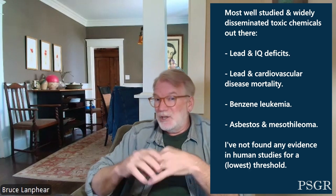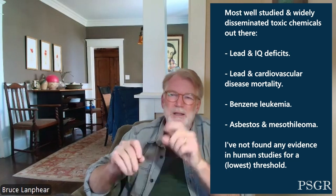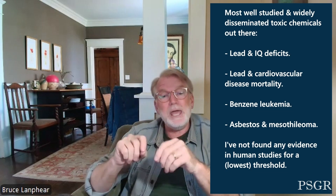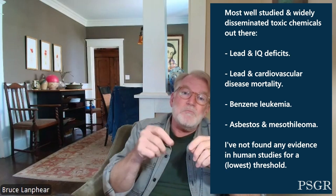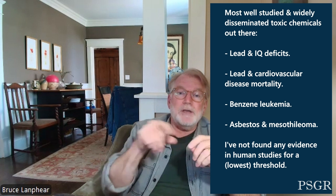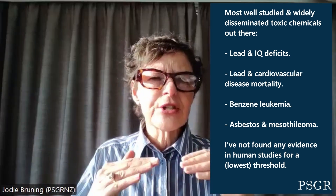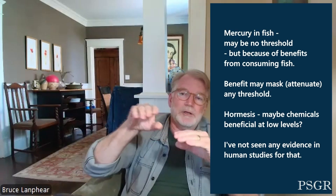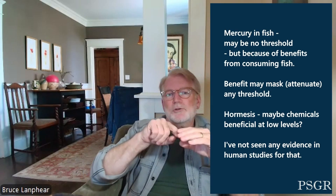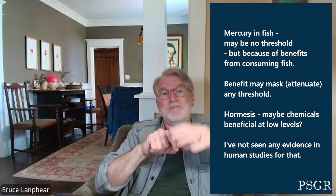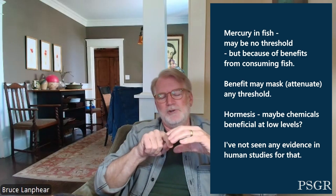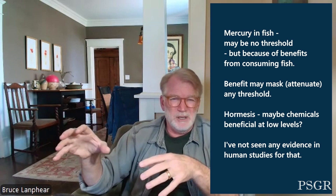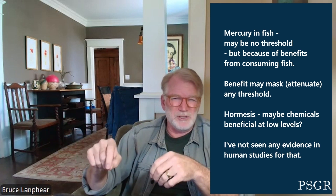I've not found any evidence in human studies for a threshold — well, maybe with one exception, and that's mercury and fish, though it's not definitive. It may be simply because most of the methylmercury we ingest is in fish, and fish is beneficial. A threshold is the lowest safe dose you can have for a lifetime — and with mercury and fish, there may be no threshold, but because there are benefits to ingesting the vehicle, it may mask any threshold. So the idea of hormesis — that these chemicals are beneficial at low levels — I've not seen any evidence for that in human studies.